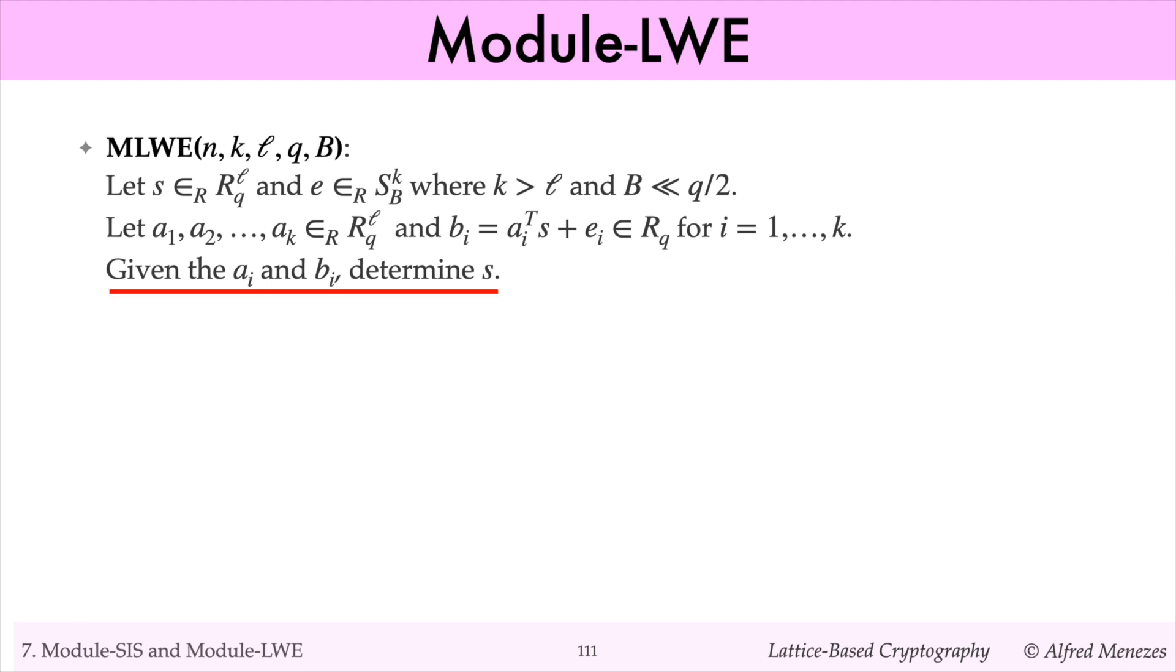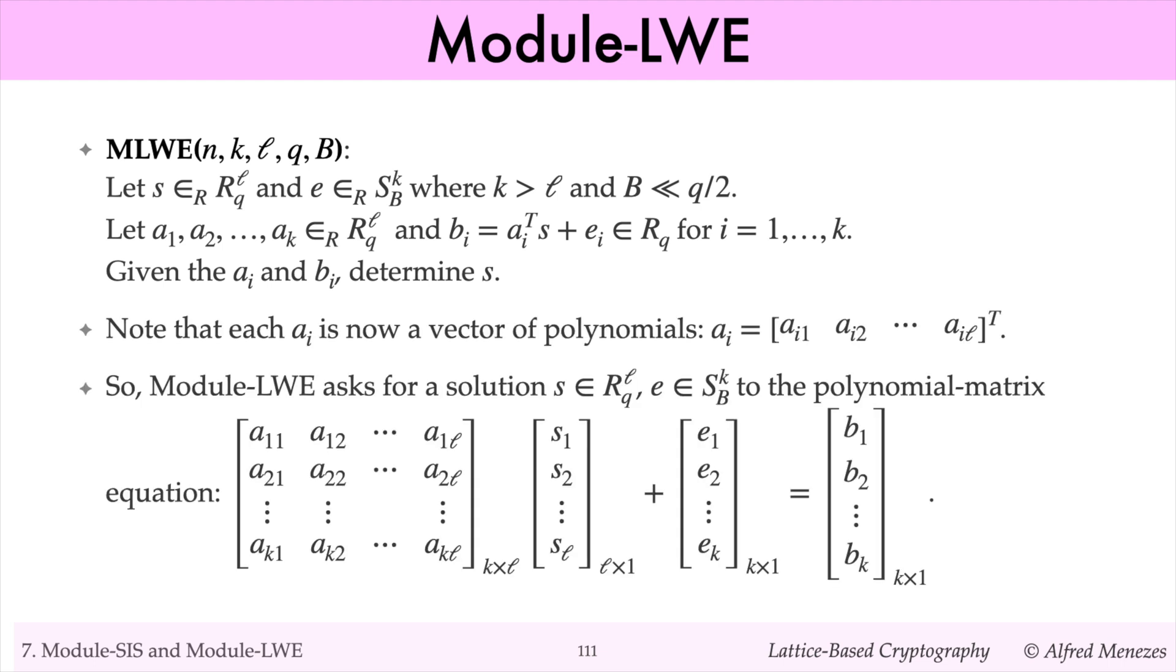and define BI to be AI transpose times S plus EI. Note that each BI is a polynomial. Given the AI and the BI, the problem is to determine the polynomial vector S. So module LWE asks for a solution SE to the following polynomial matrix equation, where the EIs are small polynomials.